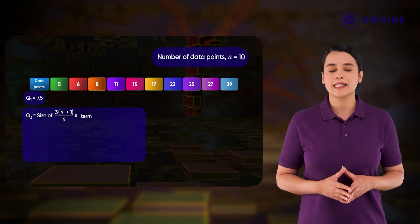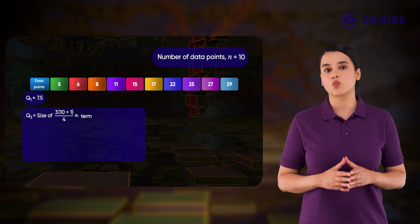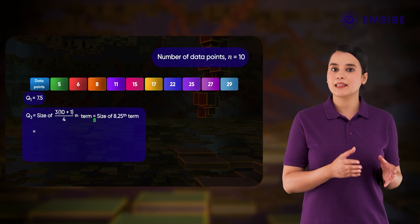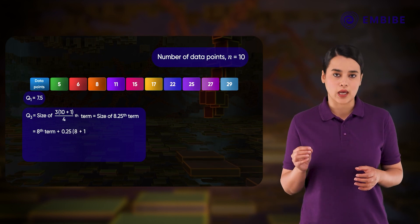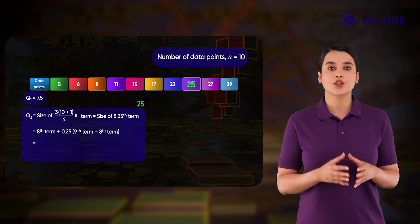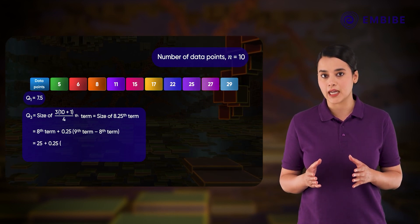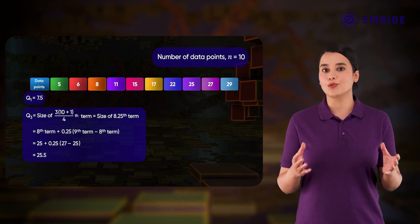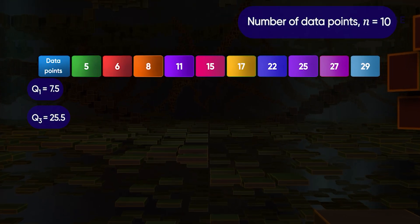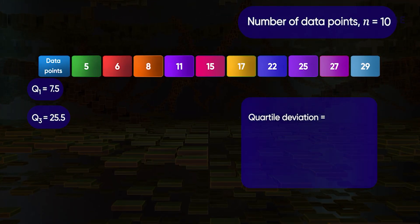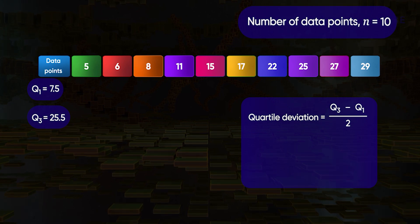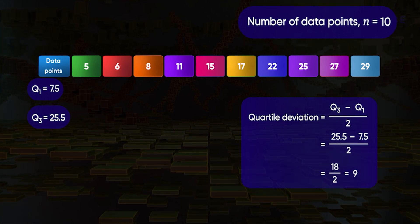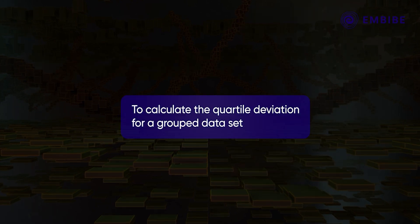Q3 is at position 3(10+1)/4, that is the 8.25th term, which equals the 8th term plus 0.25 times (9th term minus 8th term) = 25 + 0.25 × (27 − 25) = 25.5. So Q3 equals 25.5. The quartile deviation is (25.5 minus 7.5) divided by 2, which equals 9.